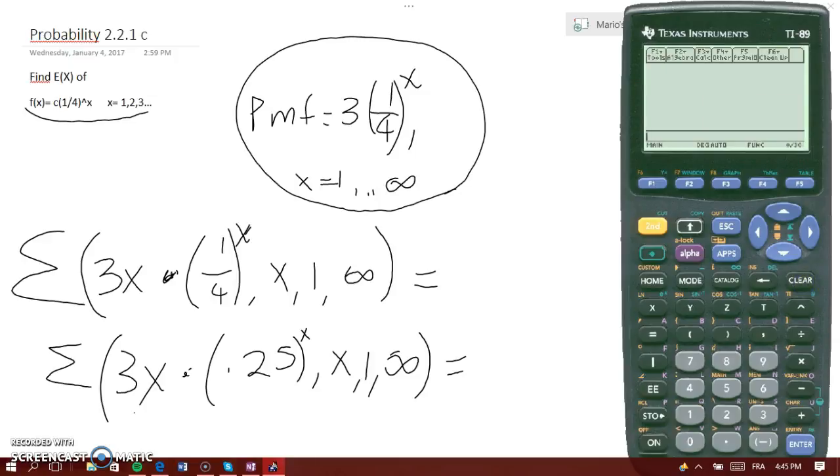So, you're going to go to F3, click number 4, and type 3x times, open parenthesis, 1 over 4, close parenthesis, exponential x, comma x, 1,